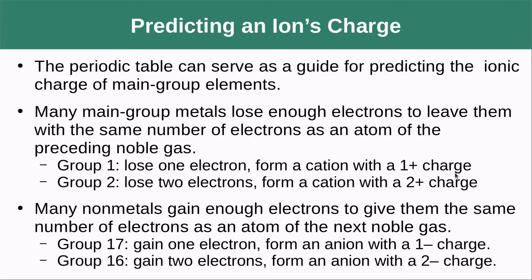The periodic table can help predict the ionic charge expected for main group elements. Many main group elements lose enough electrons to have the same number as the preceding noble gas. Group 1 loses one electron, giving a +1 charge. Group 2 loses two electrons, giving a +2 charge. On the other side, group 17 gains one electron and group 16 gains two.